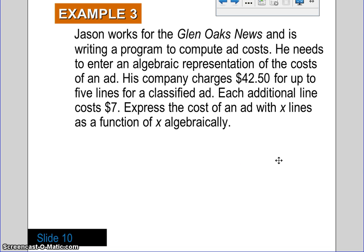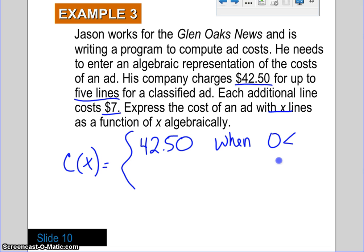Okay. For example 3, it says, Jason works at Glen Oaks News and is writing a program to compute ad costs. He needs to enter an algebraic representation of the cost of the ad. His company charges $42.50 for up to five lines for a classified ad. Each additional line costs $7. Express the cost of an ad with X lines as a function algebraically. So, it's basically asking us to create a piecewise function. We've done that many times, so we should be a little bit used to it now. So, the first scenario is the basic cost, which is $42.50. And, that is when there are greater than zero lines and up to and including five lines. So, we have that little equal sign underneath there. So, it's a less than or equal to sign.